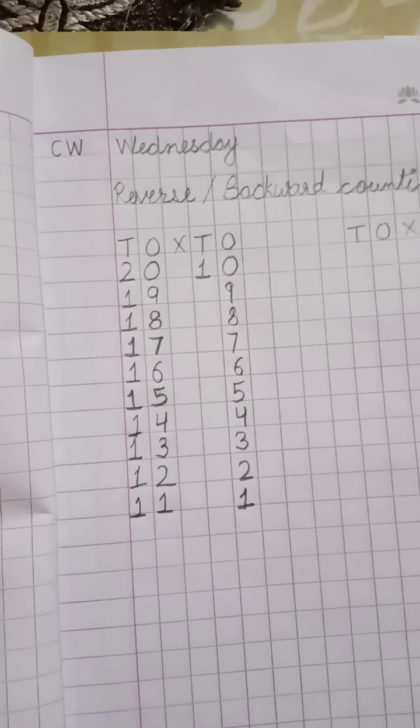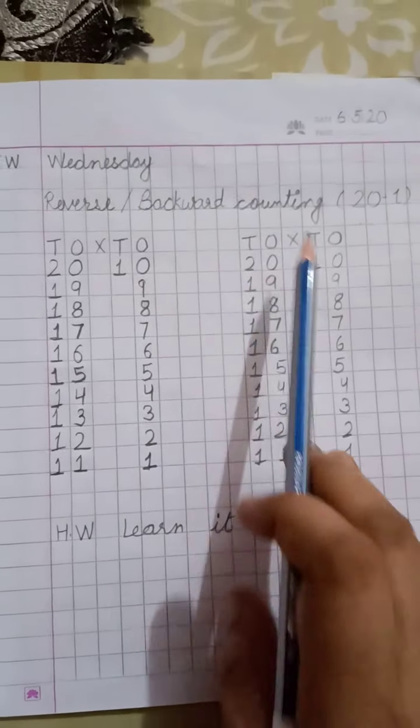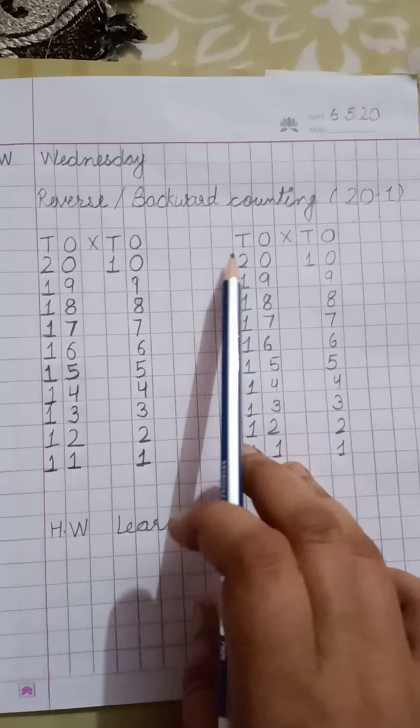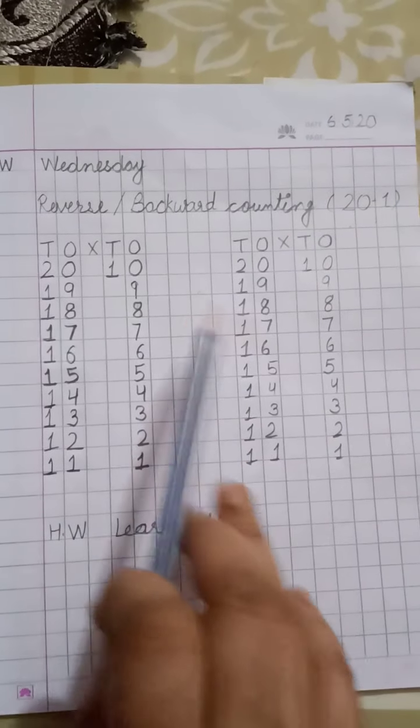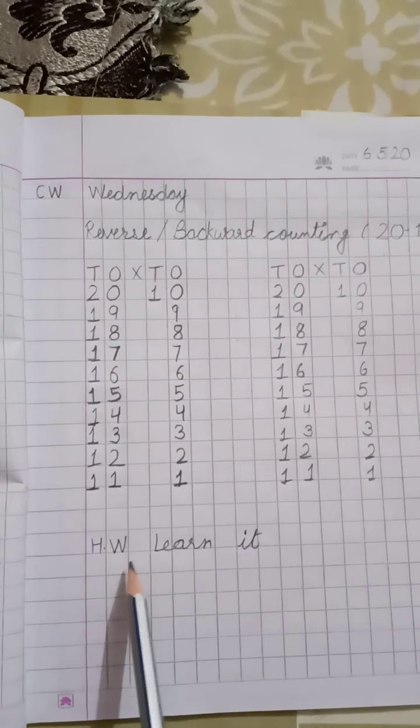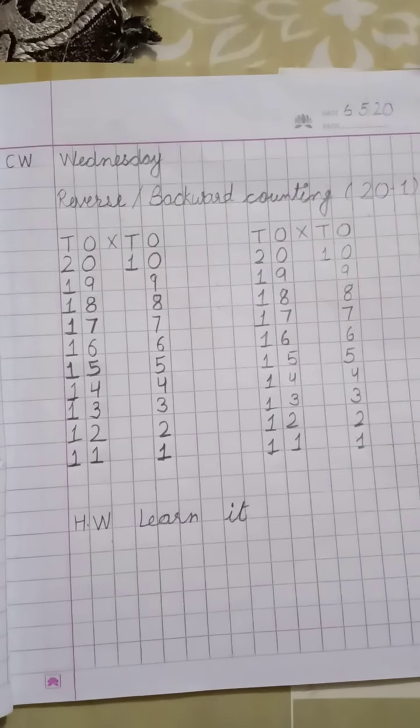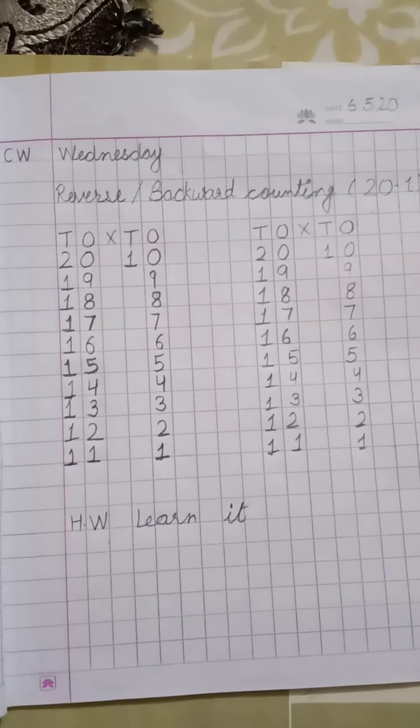Okay. अब क्या करेंगे? थोड़ा gap करके T O लिखेंगे और एक और बार लिखेंगे 20 to 1. Two times लिखने हैं हमें. और homework में हमें क्या करना है? इसको learn करना है. Okay. Bye-bye. Take care.